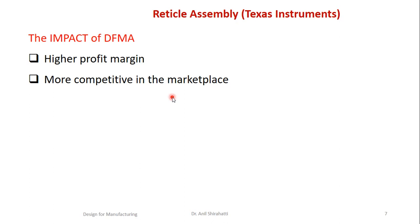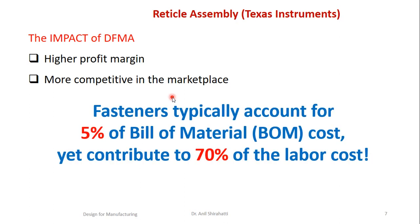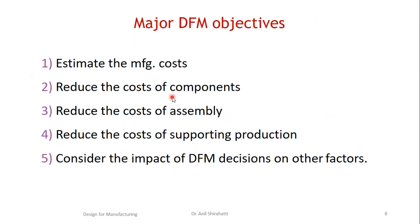The major takeaway from this case study is that fasteners typically account for 5% of the bill of material from a cost point of view, but they contribute 70% of the labor cost. Those simple nuts, bolts, and fasteners are just 5% of the total part cost, but they take more than 70% of the labor cost — leading to more assembly time and cost. The process involved estimating manufacturing cost, then reducing the cost of the component, the assembly, supporting production, and then considering DFMA decisions on other factors.